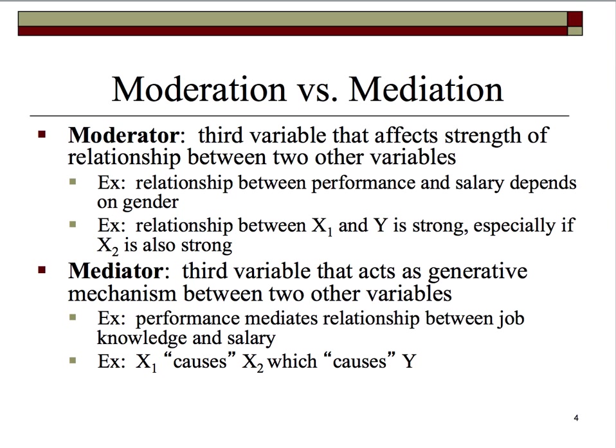Moving now to a mediator. A mediator is some third variable that acts as a generative mechanism between two other variables. We can think of, in a very loose causal sense, X1 causing X2, which causes Y. For example, performance would mediate the relationship between job knowledge and salary — job knowledge leads to or causes performance, and performance leads to or causes salary.